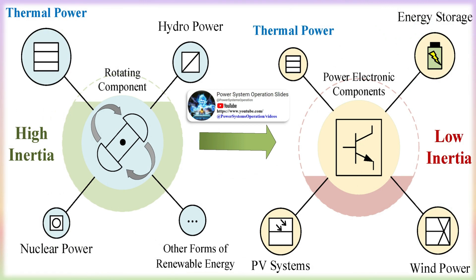Generator inertia is the starting point for examining how fast the system must respond to a contingency event. Generator inertia resists changes in system frequency; under normal conditions, electricity demand is met by the constant injection of energy into the grid from many power plants.